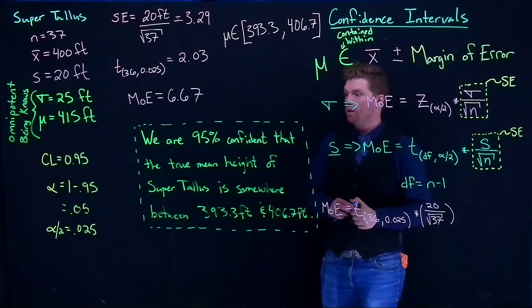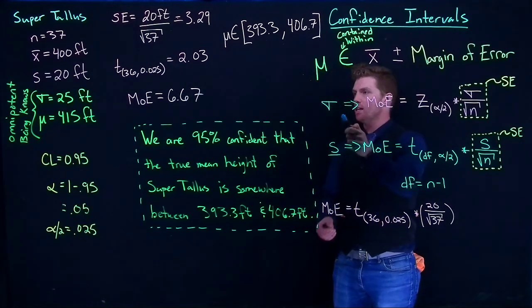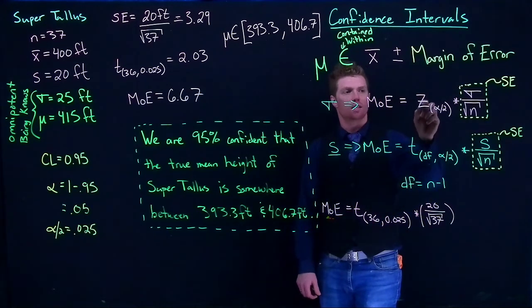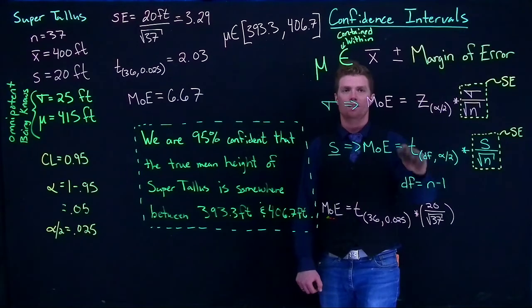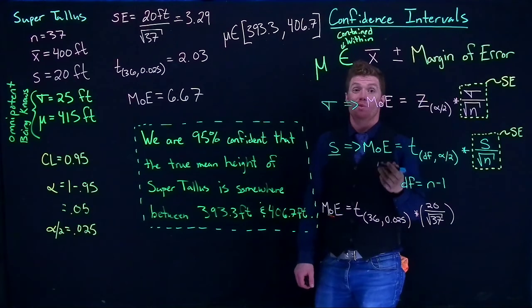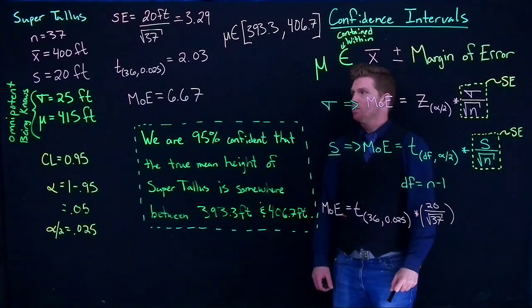And that's how we handle it when we do not know what our true population standard deviation is. There's really only one change. The change is that instead of using this Z distribution, we use the T distribution. And in reality, this is what we're going to use most of the time because most of the time, we don't know what the population standard deviation actually is.